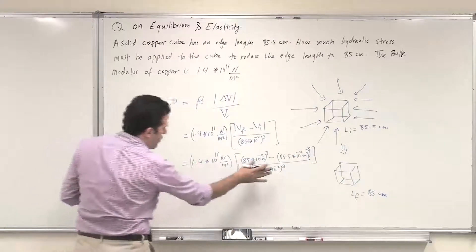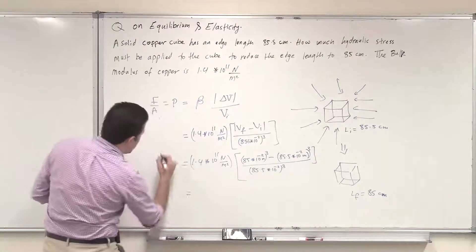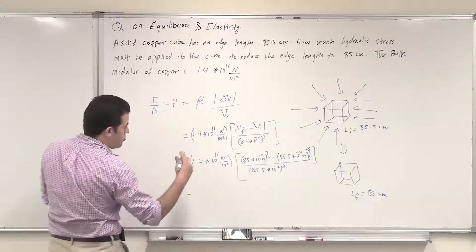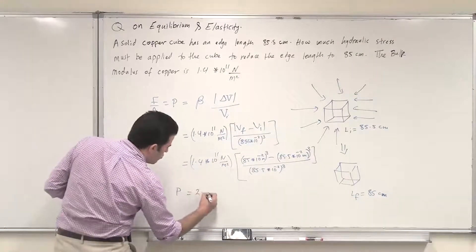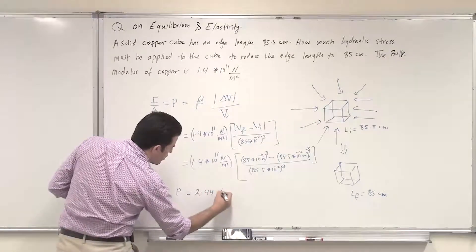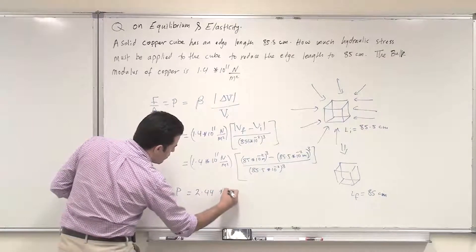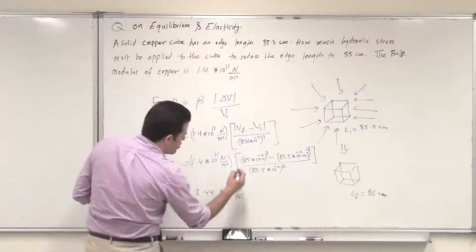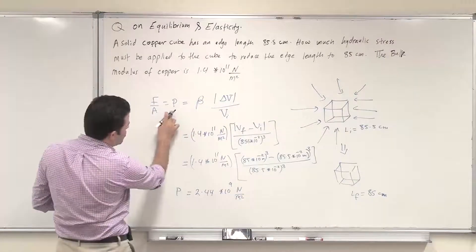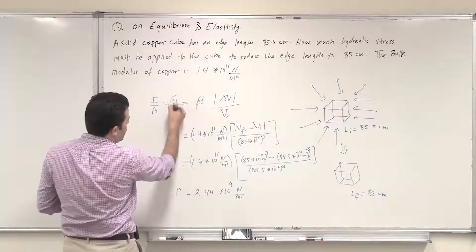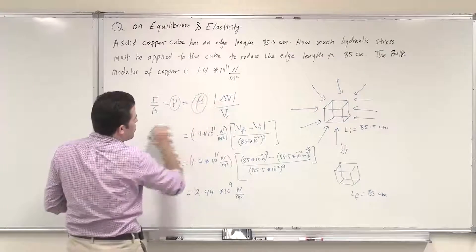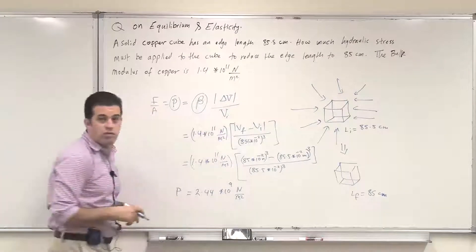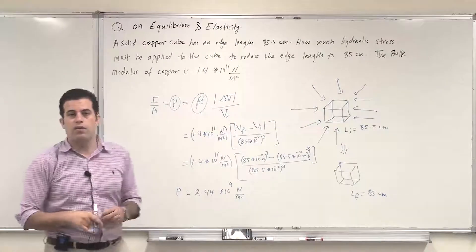Multiplying these numbers, we get that the hydraulic stress required to cause this reduction is 2.44 × 10 to the power 9 newton per meter squared. Notice that the hydraulic stress has the same unit as the bulk modulus, because the volume ratio is unitless and cancels out. Thank you very much.